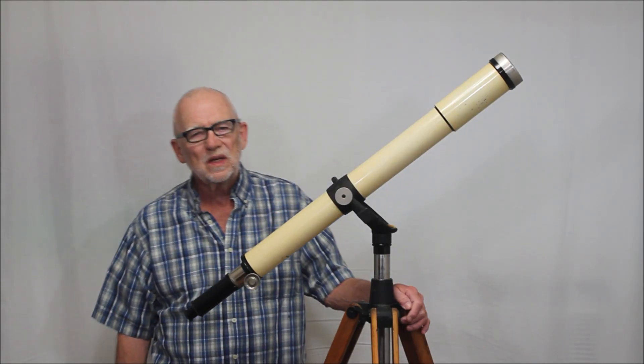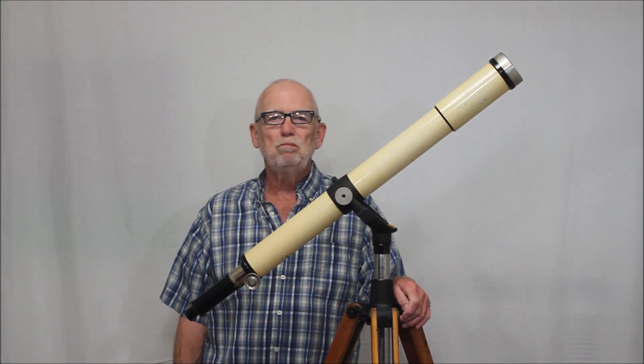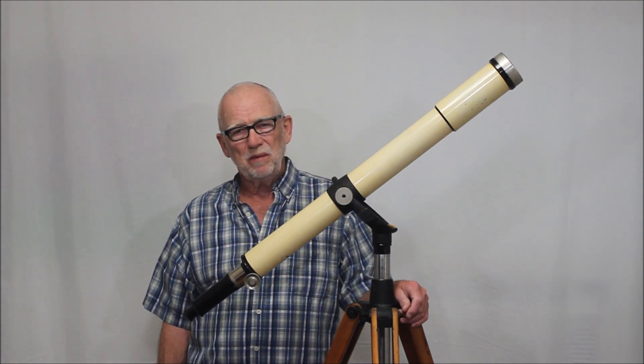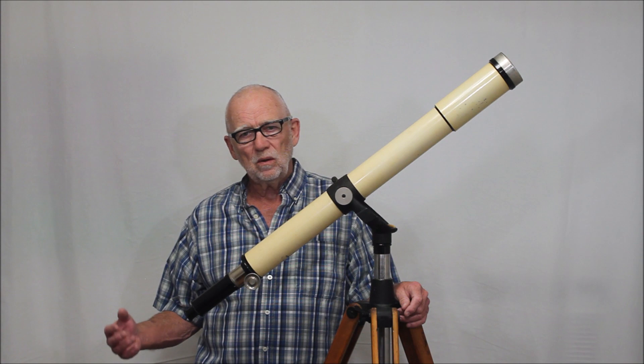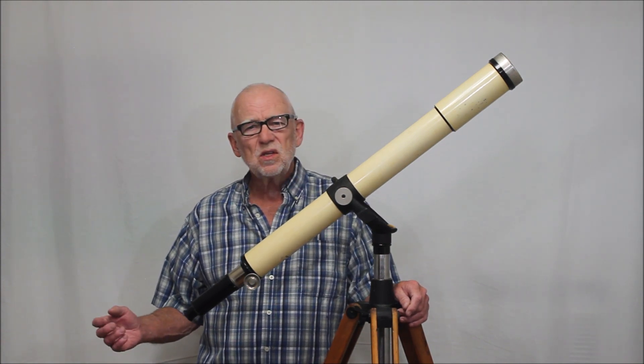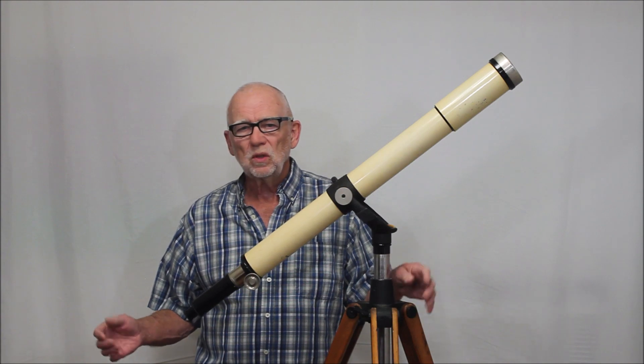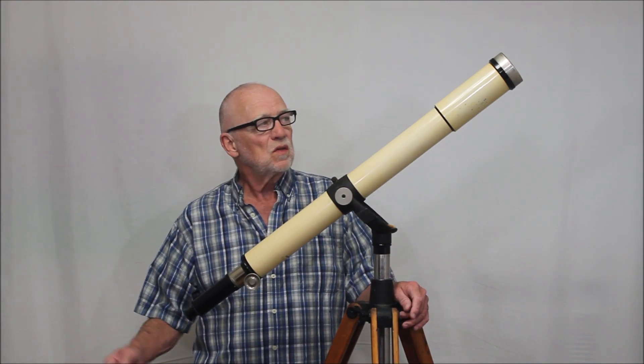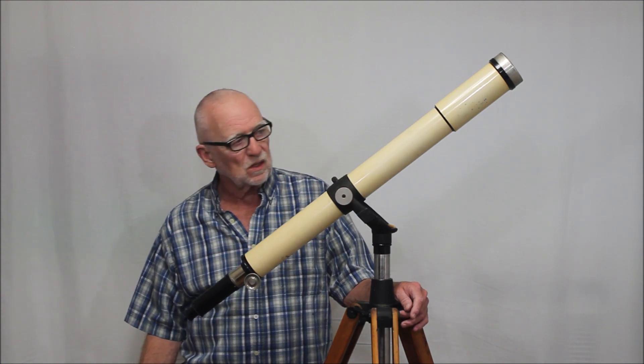Hi, my name is Dave. Today we're going to look at an Emil Busch telescope. This is a 72 millimeter, f about 920 millimeters, and this is dating from the early 1900s, about 1910 to 1920, something like that is a reasonably good guess.